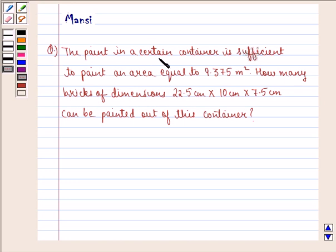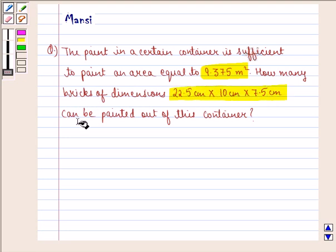The question says the paint in a certain container is sufficient to paint an area equal to 9.375 meter square. How many bricks of dimensions 22.5 centimeter into 10 centimeter into 7.5 centimeter can be painted out of this container.